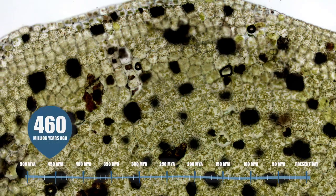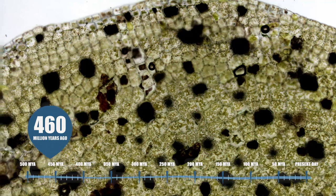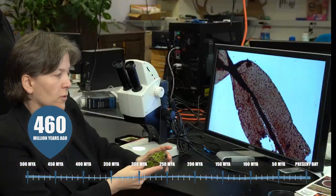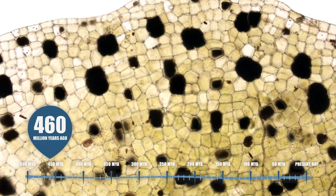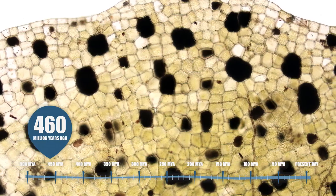Here we have a living liverwort and here is a magnification of a fossil one. So this shows us that plants were really small without pipes and without roots.